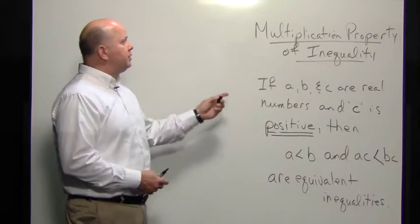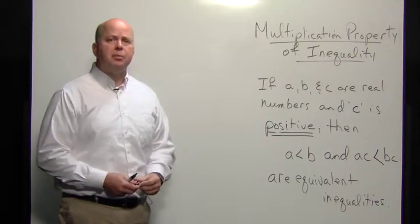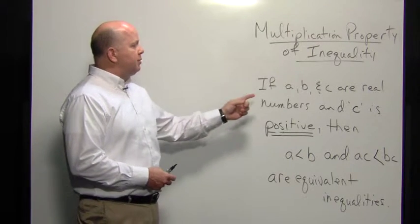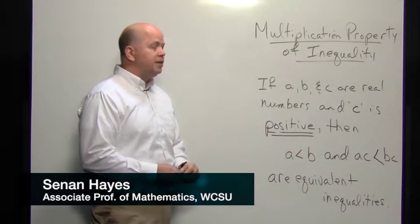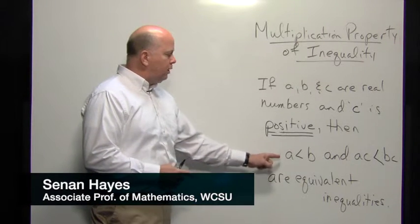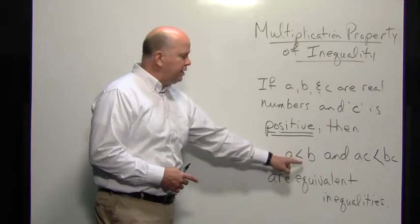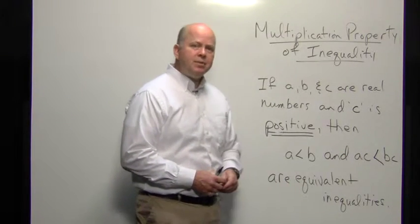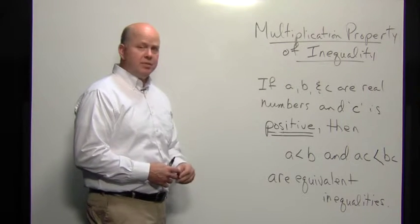This video is going to describe the multiplication property of inequality. If we have three numbers A, B, and C, and all three are real, and C is positive, then these two inequalities are going to be equivalent: A is less than B is equivalent to A times C is less than B times C.